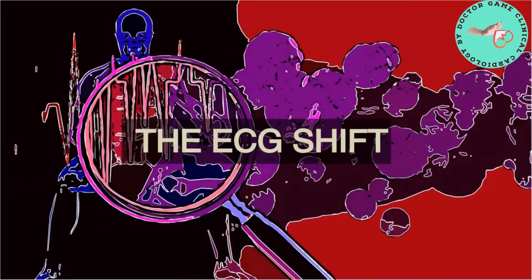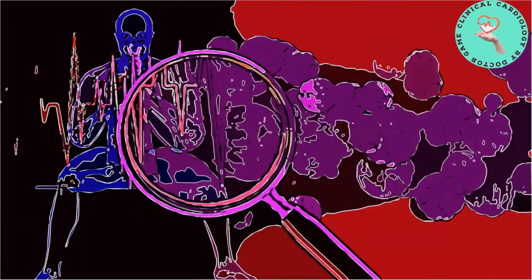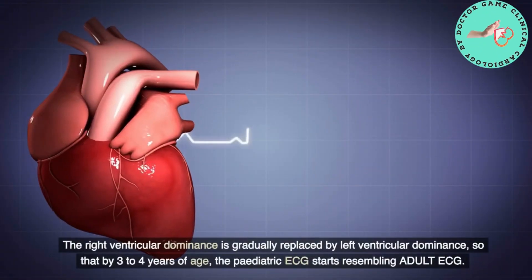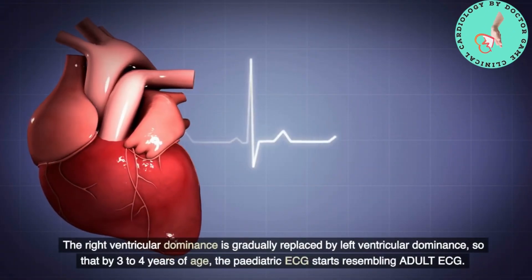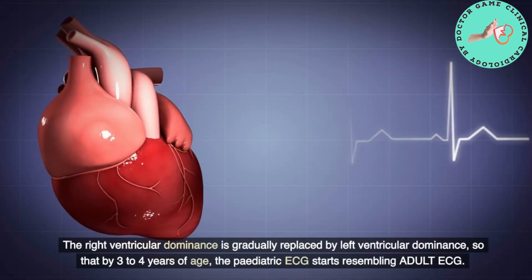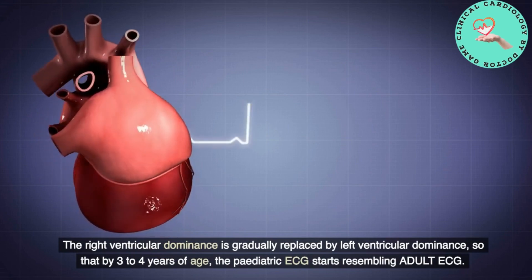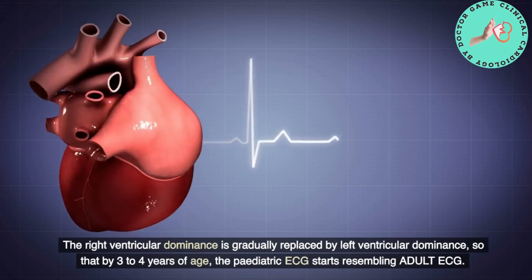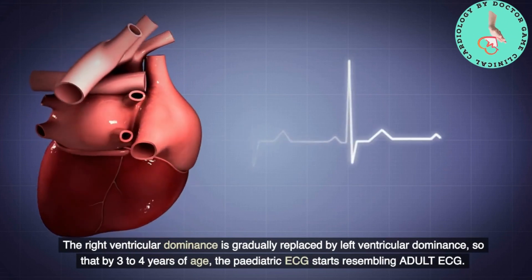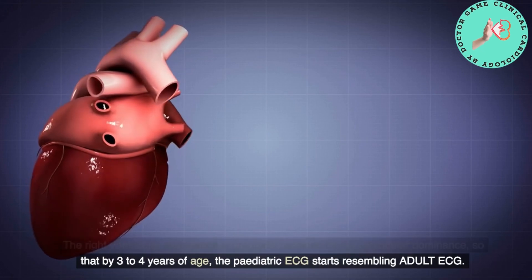Regarding the ECG shift: right ventricular dominance is gradually replaced by left ventricular dominance, so that by three to four years of age the pediatric ECG starts resembling the adult ECG.